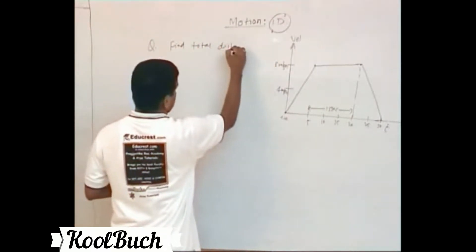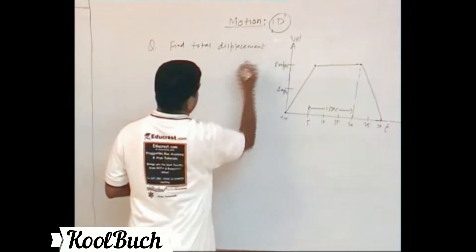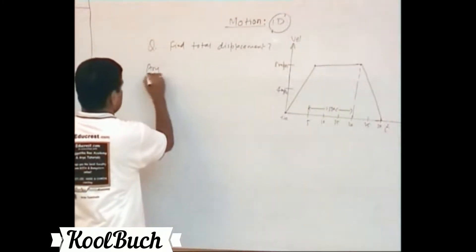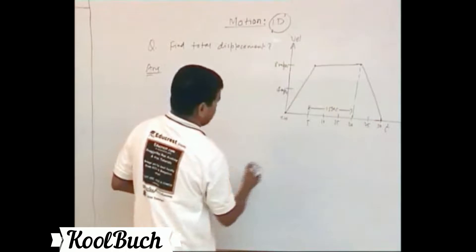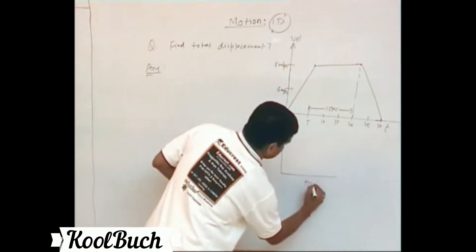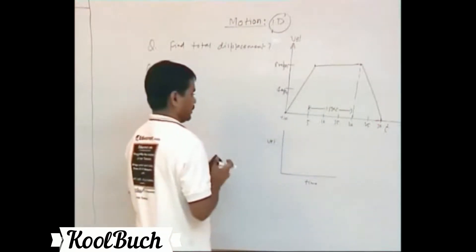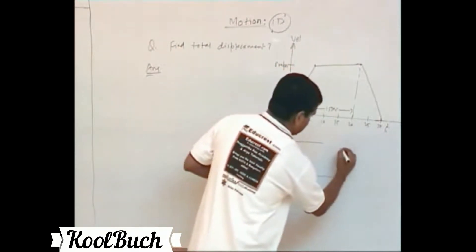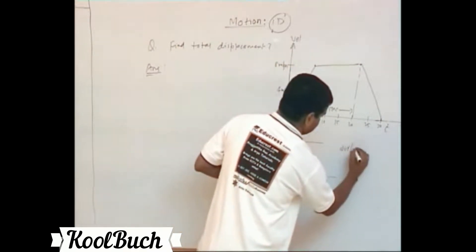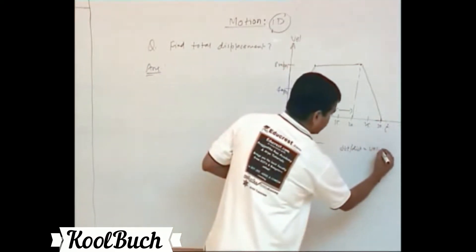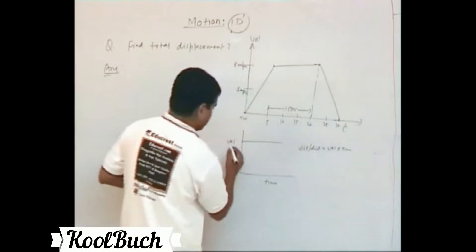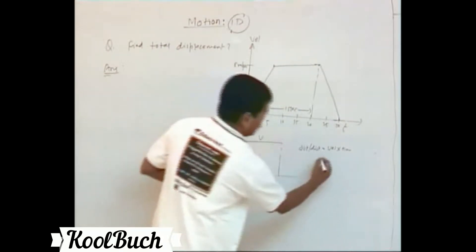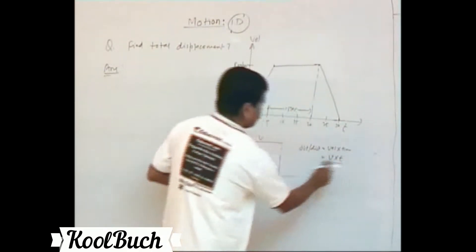So the question is: find the total displacement. How do we do that? Whenever we take a simple case of time versus velocity and velocity remains constant, displacement equals velocity into time. So if velocity is v and time taken is t, displacement is v into t.